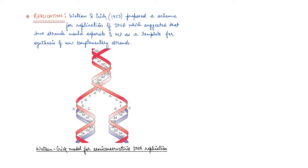To quote their original statement as it is given in NCERT, what they said is: 'It has not escaped our notice that the specific pairing we have postulated immediately suggests a possible copying mechanism for the genetic material.' They said this in 1953. The specific pairing between the nitrogenous bases — the purines and pyrimidines — immediately suggests a possible copying mechanism for the genetic material.